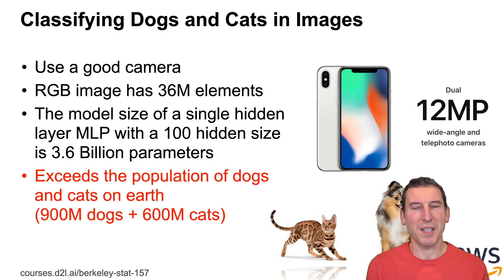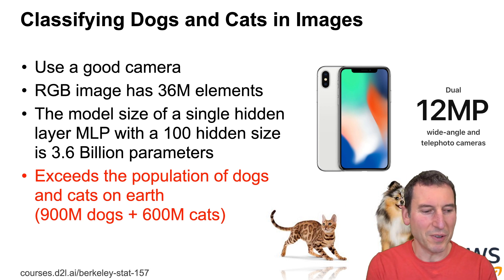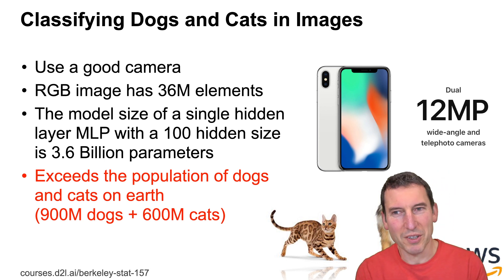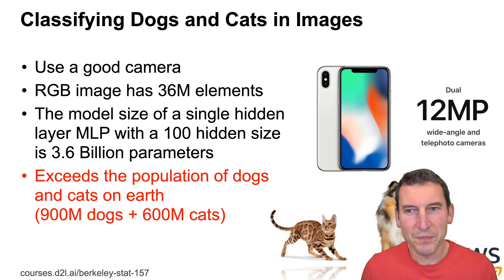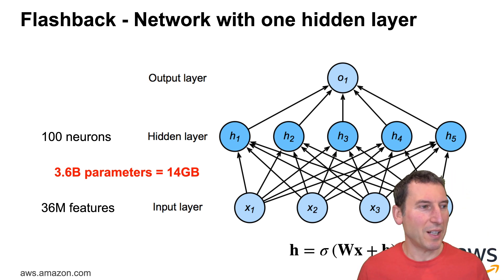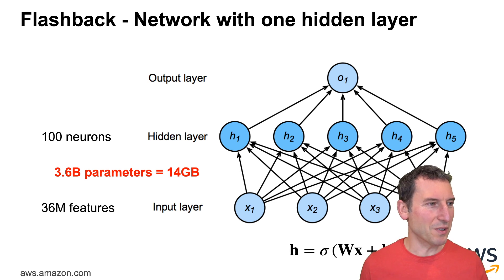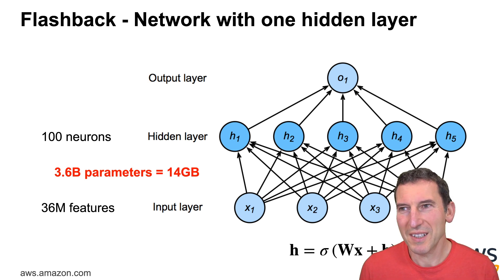Even if I took a photo of each and every single cat and dog that exists in the world, I would probably not be able to build a really good classifier. At the same time, we know that iPhone, Google Photos, AWS Rekognition, and similar services can very easily classify cats and dogs. So the naive MLP approach clearly doesn't work. To spell it out: 36 million input dimensions times 100 neurons equals 3.6 billion parameters — around 14 gigabytes of memory — and most modern GPUs will struggle with that.